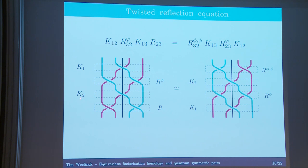If we think about coloring these pictures by representations in the quantum group, we would color the blue braids with normal representations, but their Z2 orbits are colored by representations twisted by phi. So if we do K squared and then apply the R matrix, we need to twist one leg of the R matrix by phi — and similarly elsewhere — which is exactly capturing this twisted reflection equation.